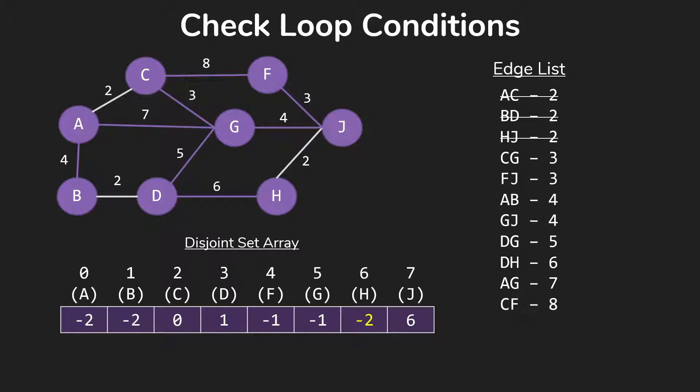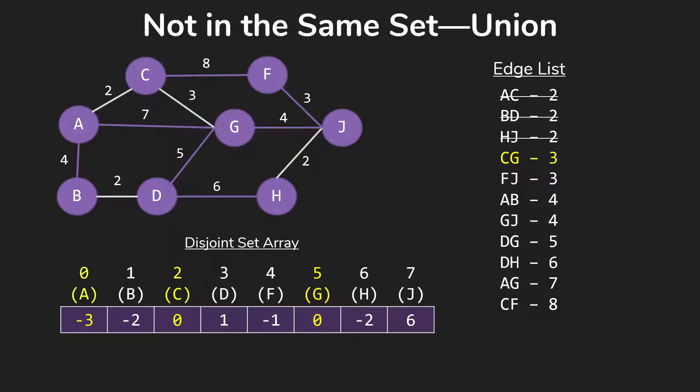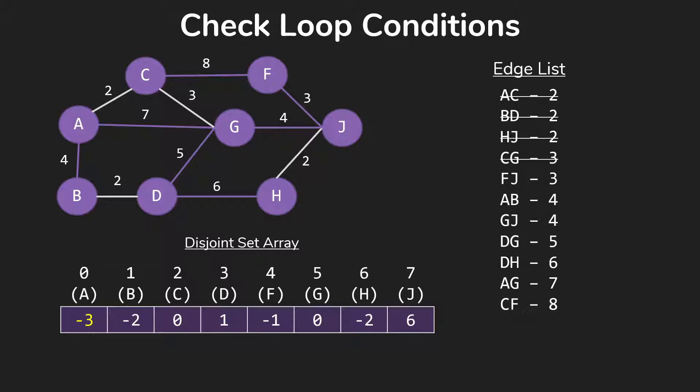so we move on to the next edge, CG. Those are in different sets. So we're going to add that edge to our tree and do that union. Still haven't finished,